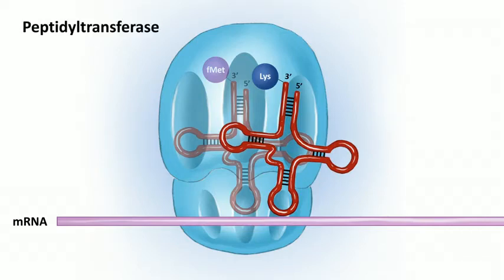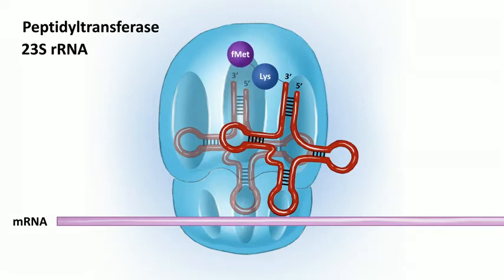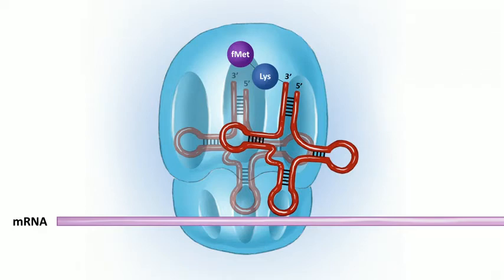With two tRNAs side by side — one in the P site and one in the A site — there's a part of the large 50S ribosomal subunit with peptidyl transferase activity, which transfers the amino acid from the P site onto the amino acid at the A site. In prokaryotes this peptidyl transferase activity is found in the 23S ribosomal RNA — a type of ribozyme — within the 50S subunit.